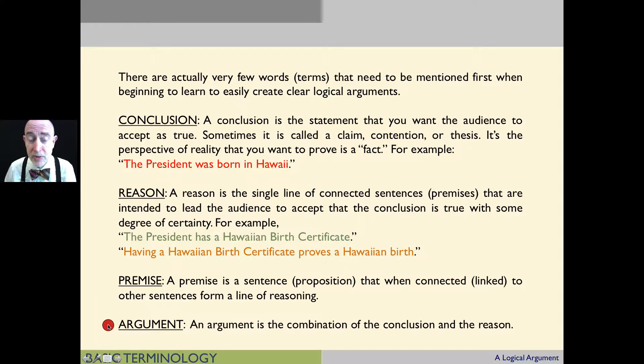Our last one is argument. And an argument is a combination of the conclusion and the reason. So in this example, the argument will consist of the conclusion, which is, the president was born in Hawaii, and the two premises that together form the reason. Because, you could say, because the president has a Hawaiian birth certificate, and having a Hawaiian birth certificate proves a Hawaiian birth. Now remember, in this segment right here, we're just working on terminology. We're not worried about the structure of argument. Just some basic terms to get down.